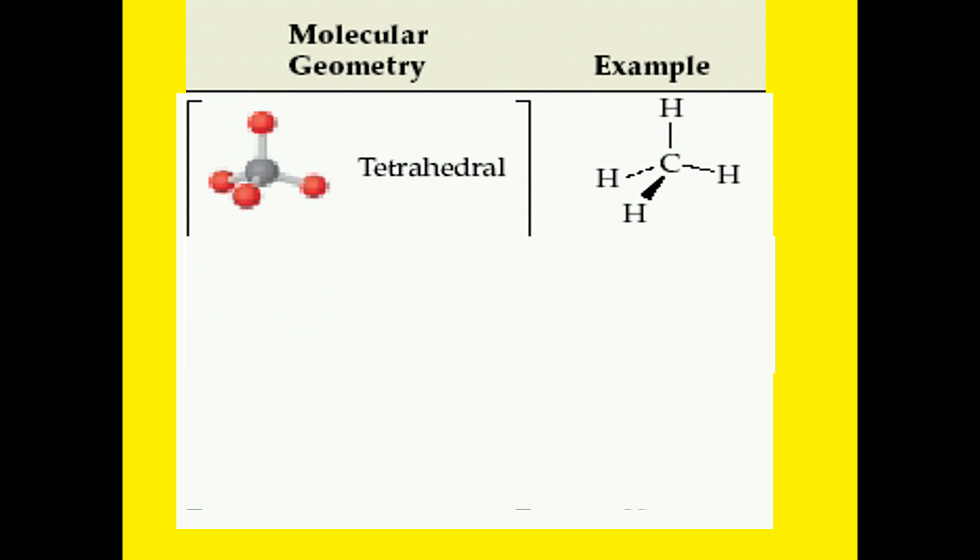Now, replacing one bond with a lone pair, we can now call this a trigonal pyramidal. Having two bonds replaced gives us the shape we call bent.